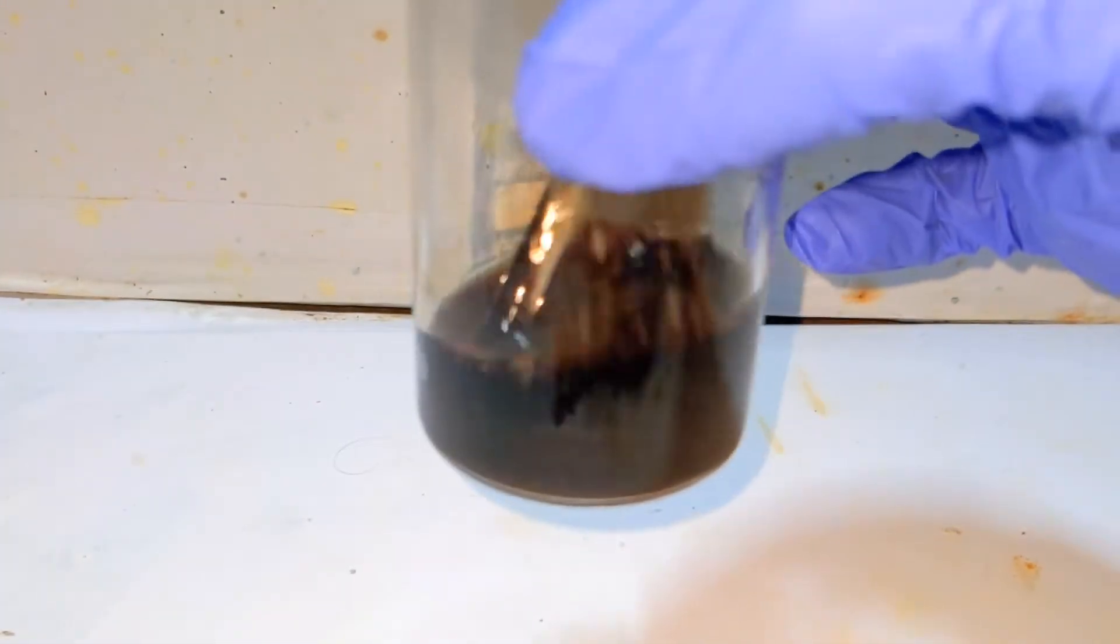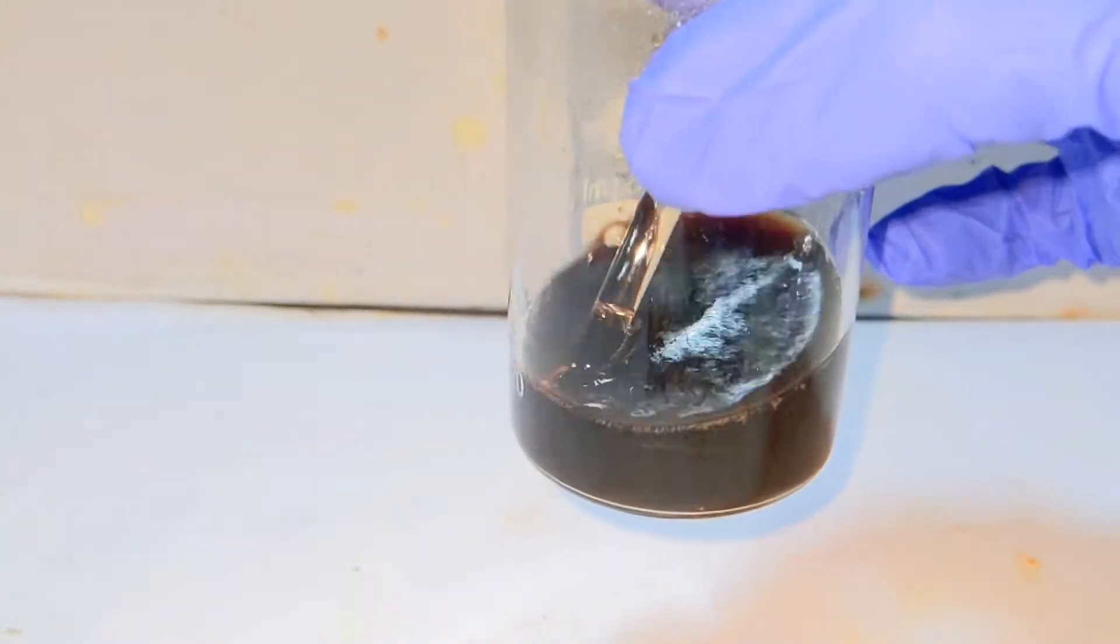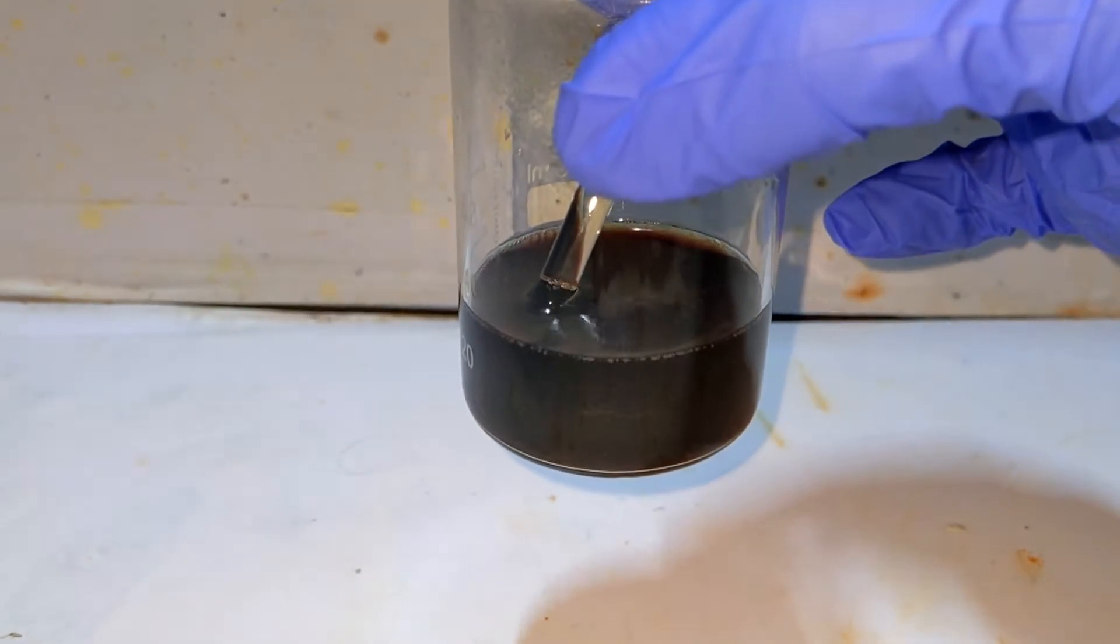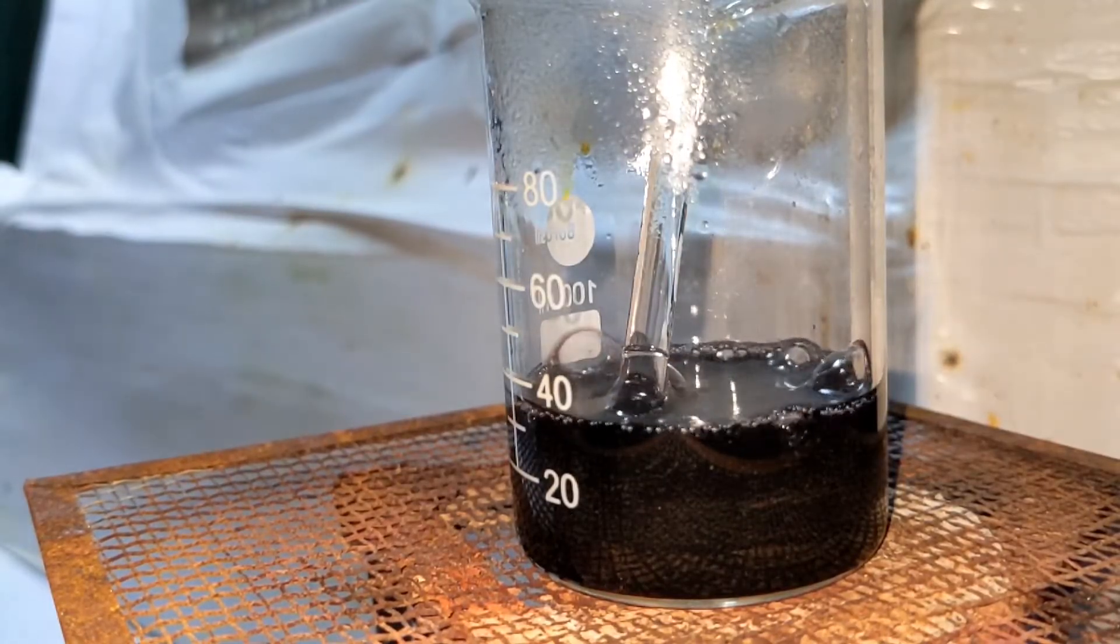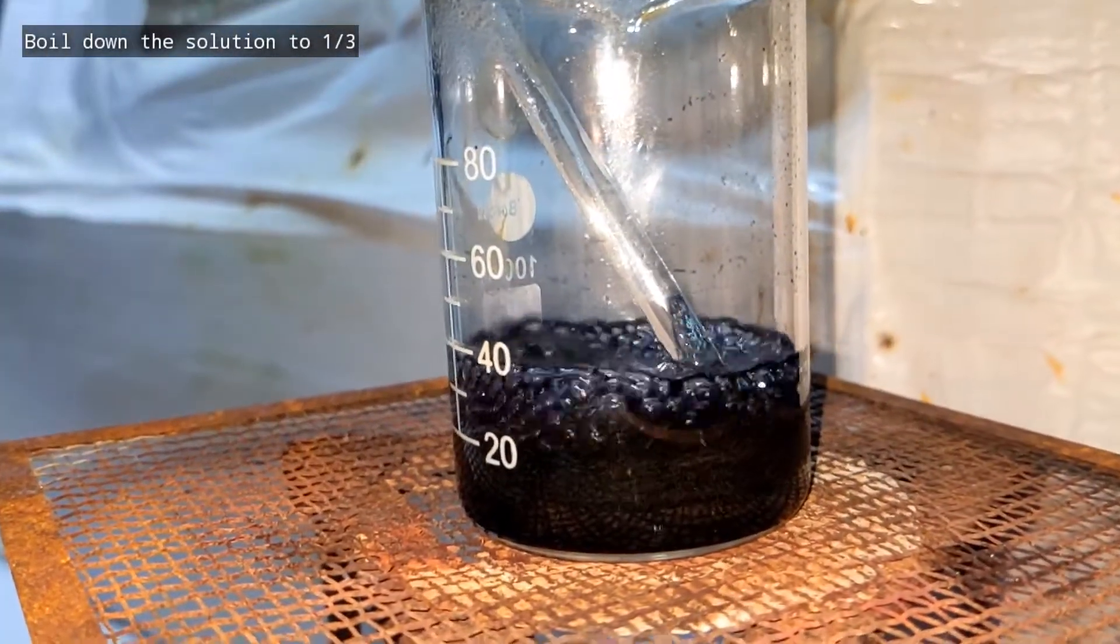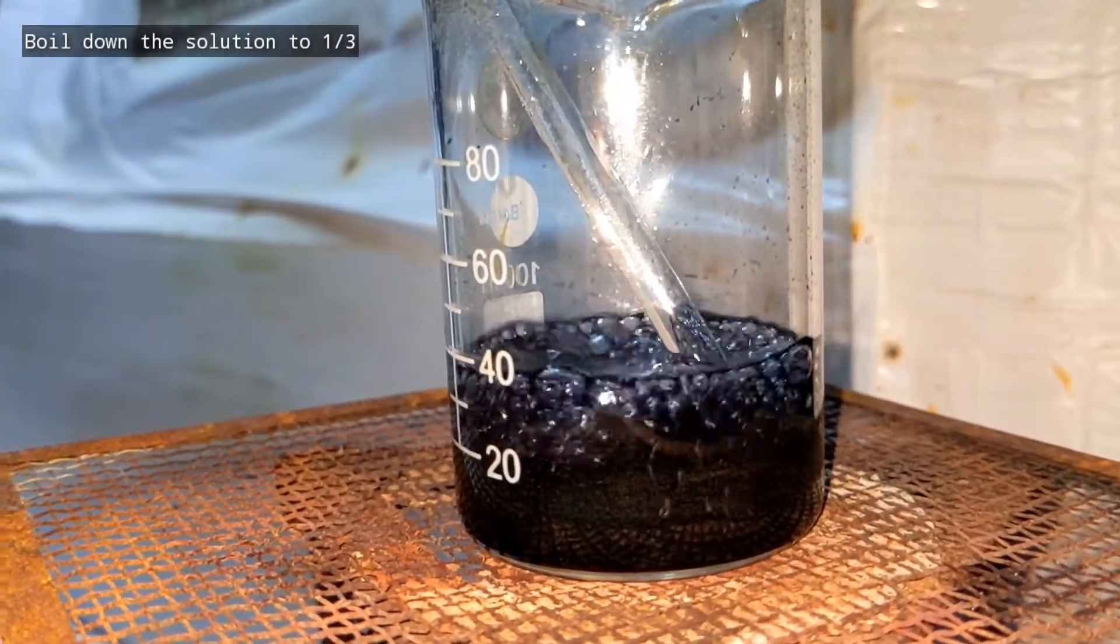Once all the dichromate addition is complete, the solution was boiled down to about one-third of its original volume and then allowed to cool down to room temperature.